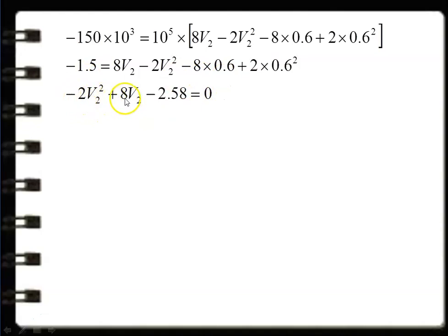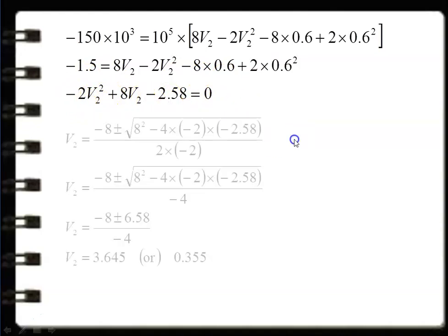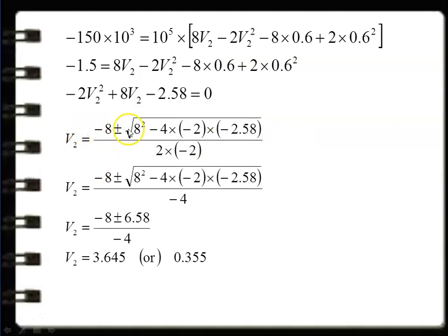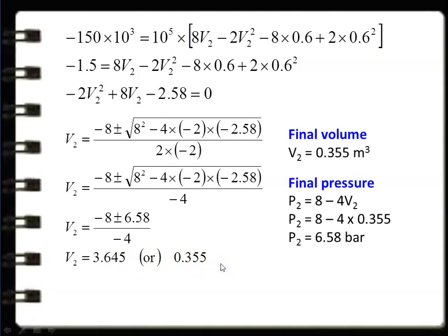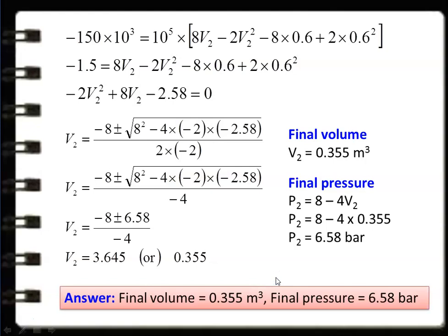Solving the quadratic equation using V2 = (−B ± √(B² − 4AC)) / 2A, we get V2 = 3.645 or 0.355. The correct answer is V2 = 0.355 m³, because the volume V2 will be less than V1 = 0.6 m³ since this is a compression process. Final pressure: P2 = 8 − 4V2 = 8 − 4(0.355) = 6.58 bar. Answer: final volume = 0.355 m³, final pressure = 6.58 bar.